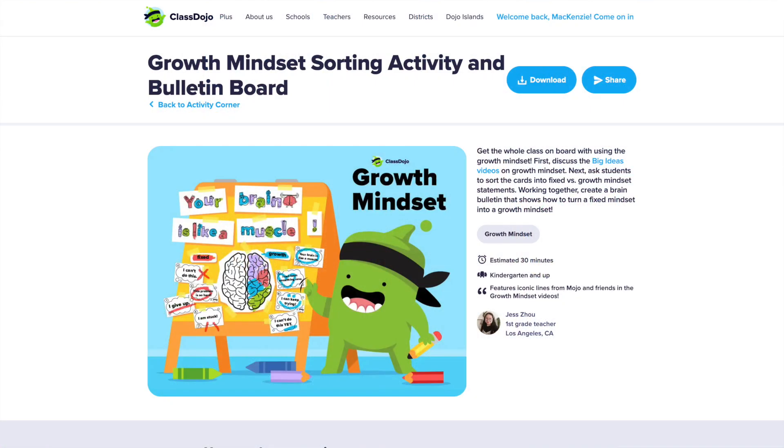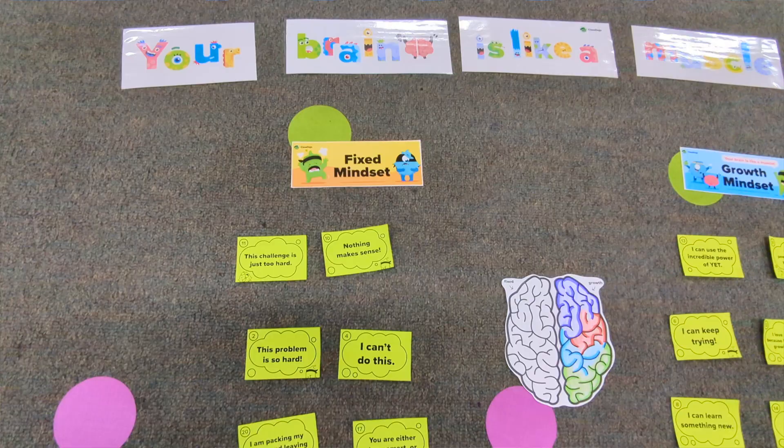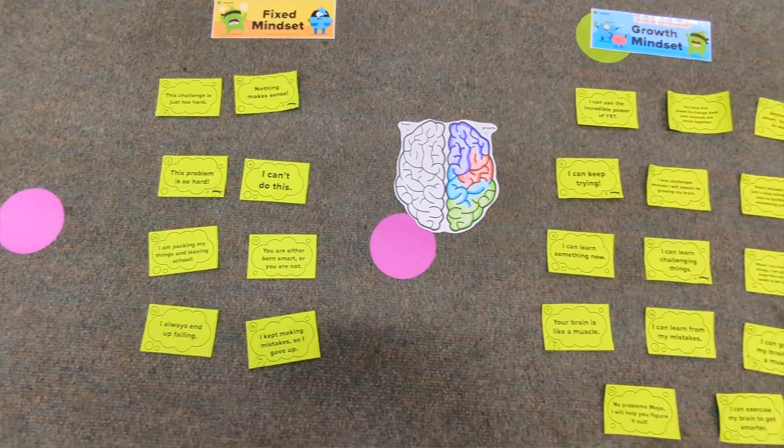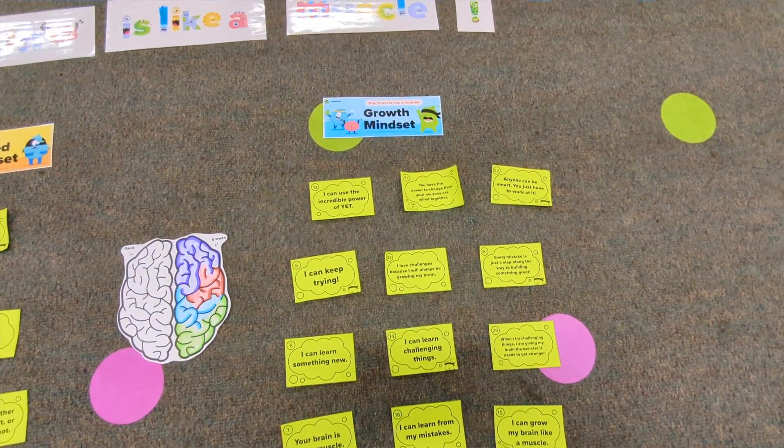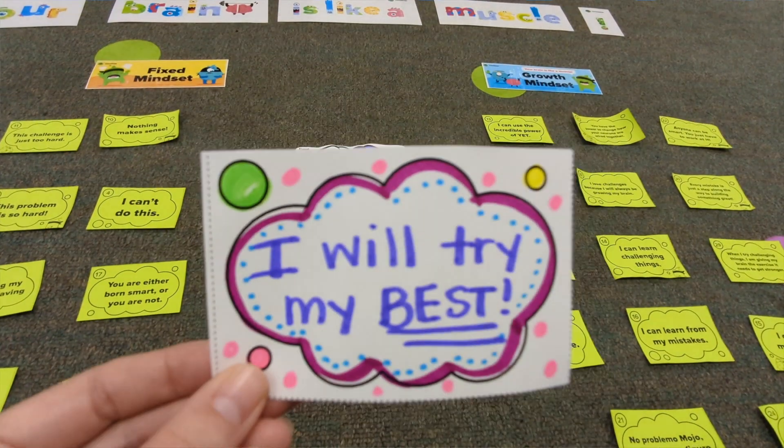I love pairing the Big Ideas videos with other activities from Mojo's Activity Corner. At the beginning of the year, we always start with growth mindset because I really like instilling that in my students from the start. We take time to watch each chapter of Mojo's adventures throughout a week, and then at the end we do a little activity to practice the difference between a fixed and a growth mindset. Each student takes a different quote that reflects either a fixed or growth mindset, takes a turn to read their card, and as a class we determine which mindset it reflects and sort the different cards. At the end, I give students blank chat bubbles and they write their own little growth mindset message to be displayed in the classroom.